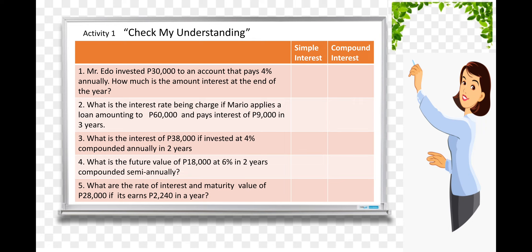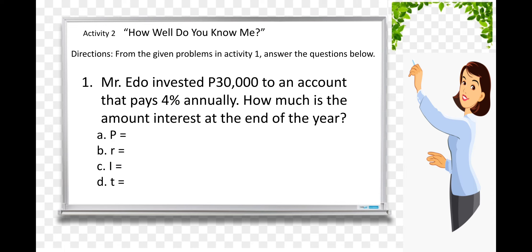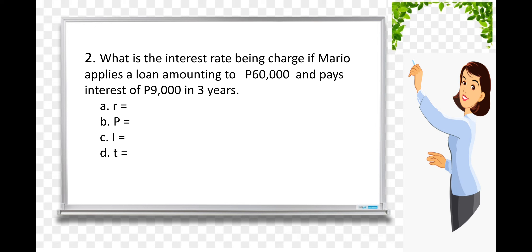For your activity, that is 'Check My Understanding.' You're going to read and analyze the given problems, then check if it is simple or compound interest, from number 1 to 5. For Activity 2, 'How Well Do You Know Me?' — from the given problems in Activity 1, you're going to answer: what is the principal, rate, interest, and time.